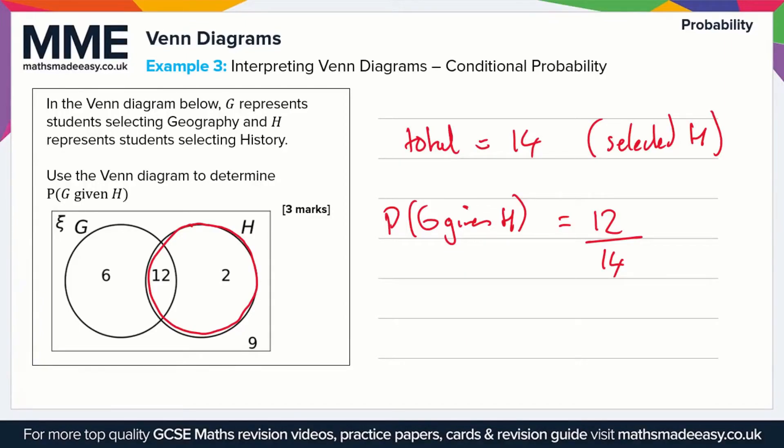And of course you'd want to cancel this down, so that's going to be equal to, if we divide top and bottom by 2, 6 over 7. You can't simplify this anymore, so that's our final answer.